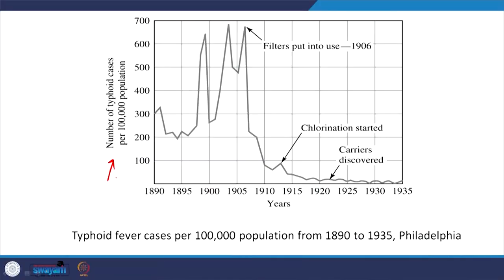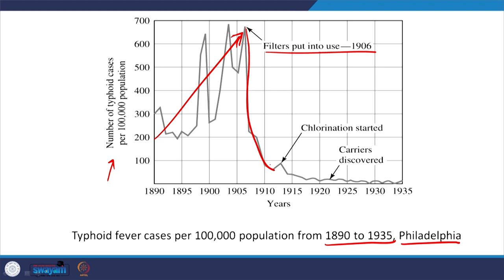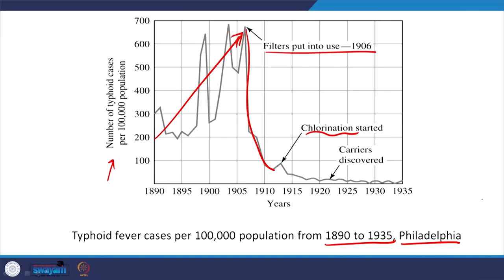We started looking at data showing numbers of typhoid cases per 1 lakh population in Philadelphia, 1890 to 1935. We saw that with increasing urbanization, there were increasing numbers of typhoid cases. Then, based on trial and error, people figured out that sand filtration led to fewer cases. They started using filters and saw a great drop in Philadelphia. And then, by trial and error, people understood that chlorination was leading to fewer typhoid cases and thus fewer deaths. After chlorination, there was an exponential decrease.